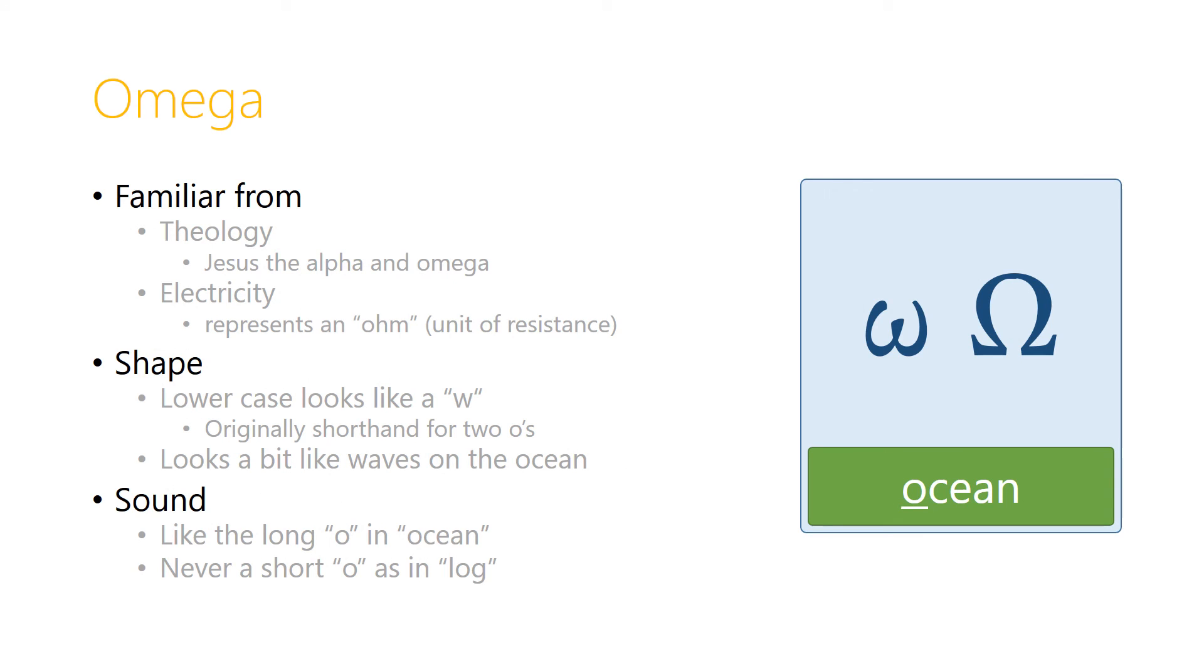Omega is the last letter of the whole Greek alphabet, and this might be familiar to us from theology, where we talk about Jesus as the alpha and omega. It also might be familiar from studying electricity, where it represents an ohm, which is a unit of resistance.